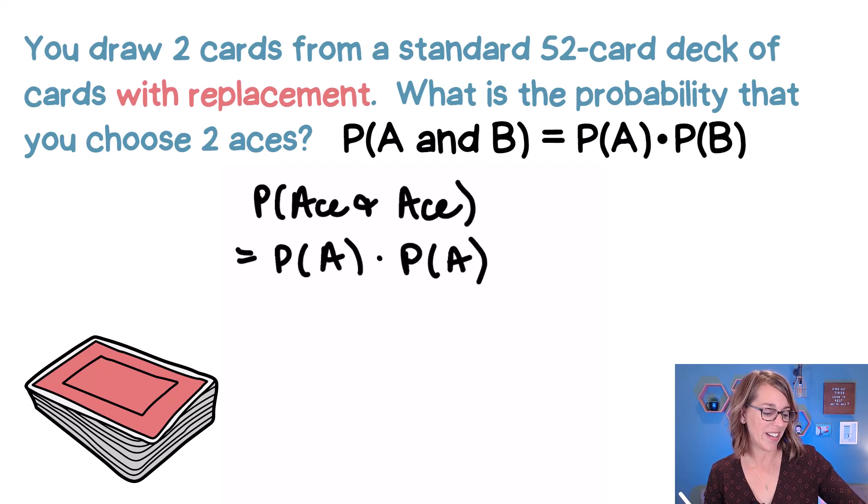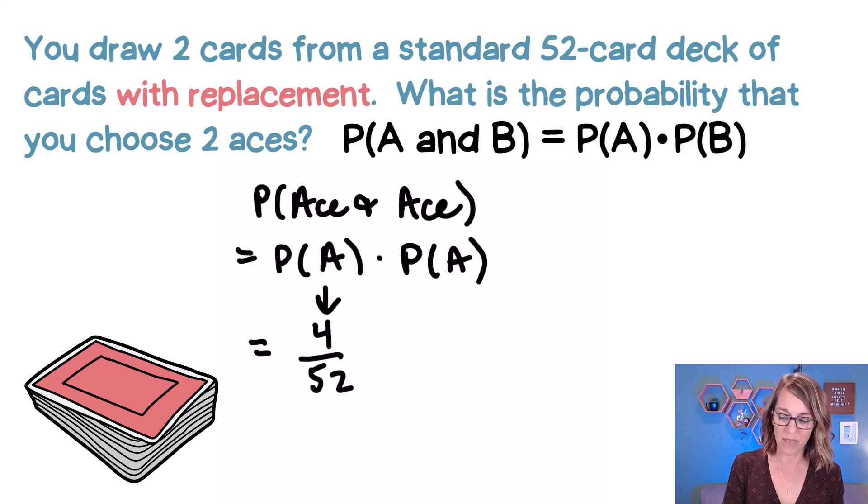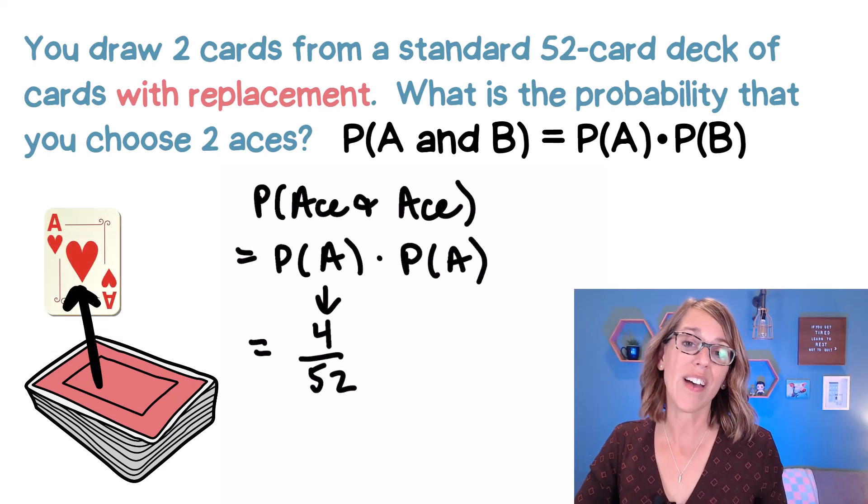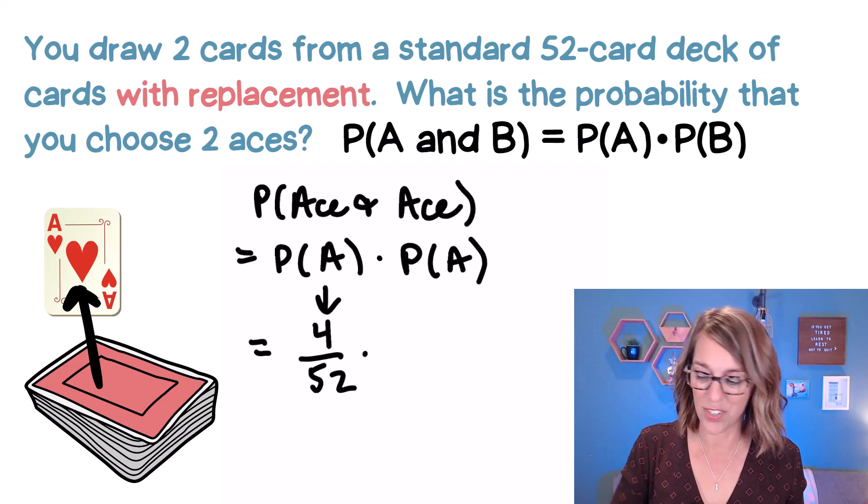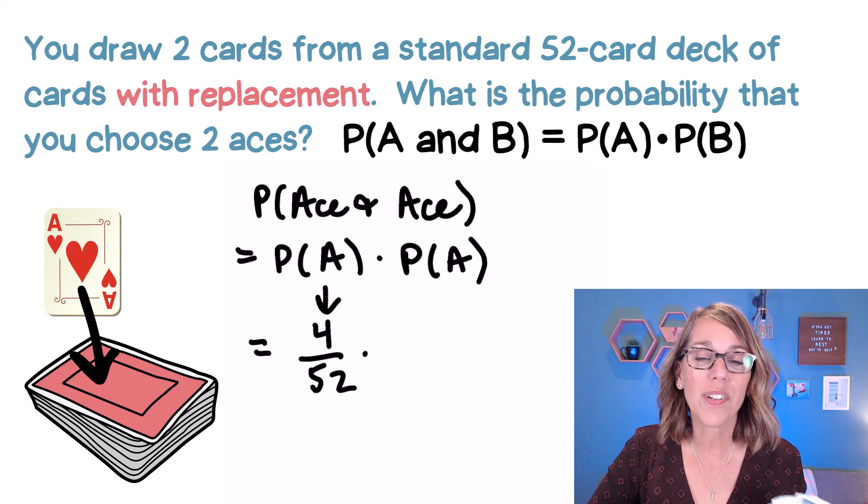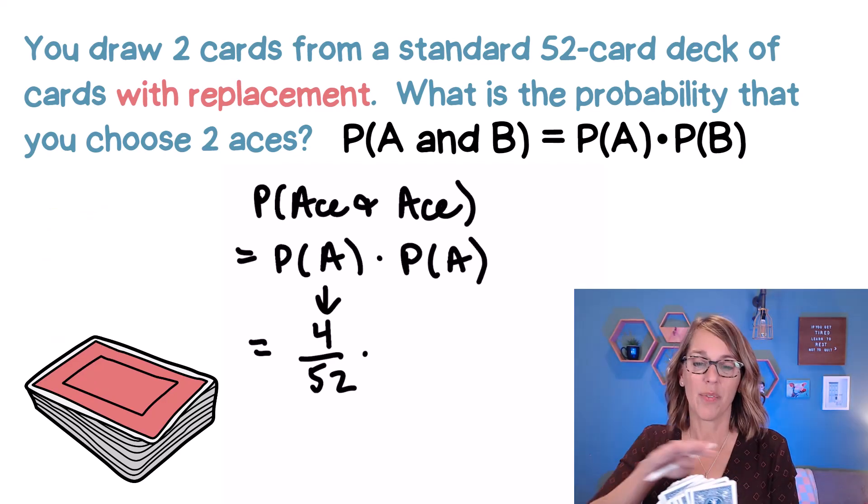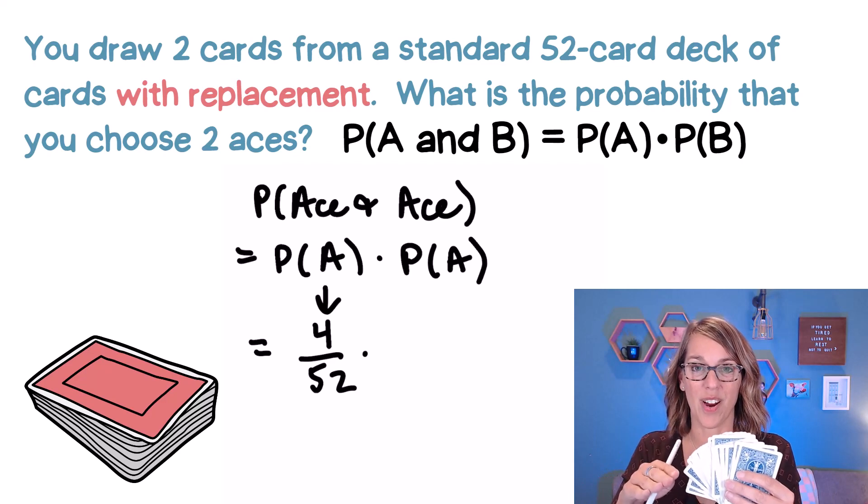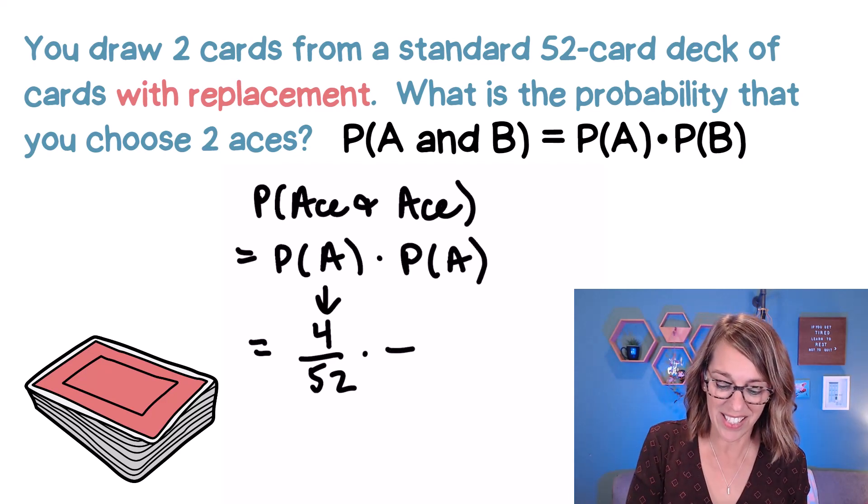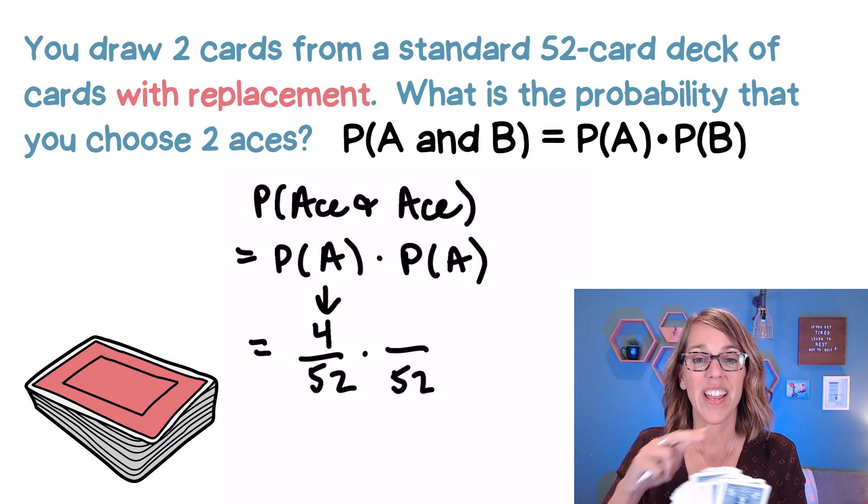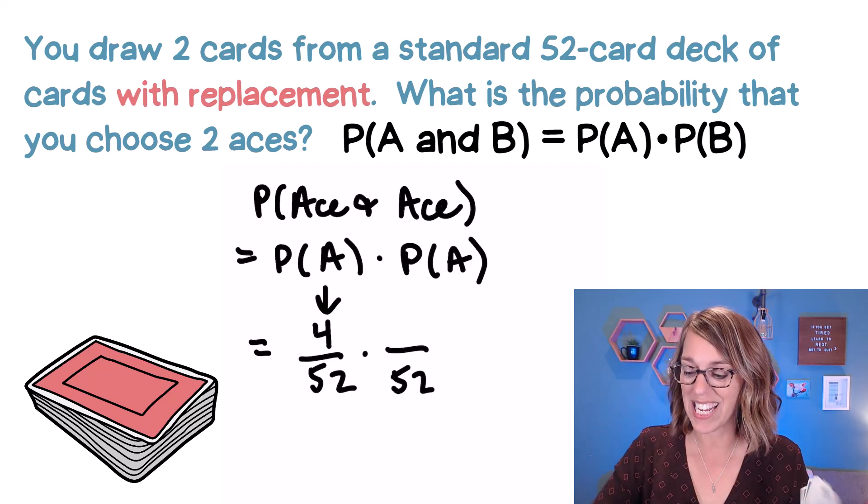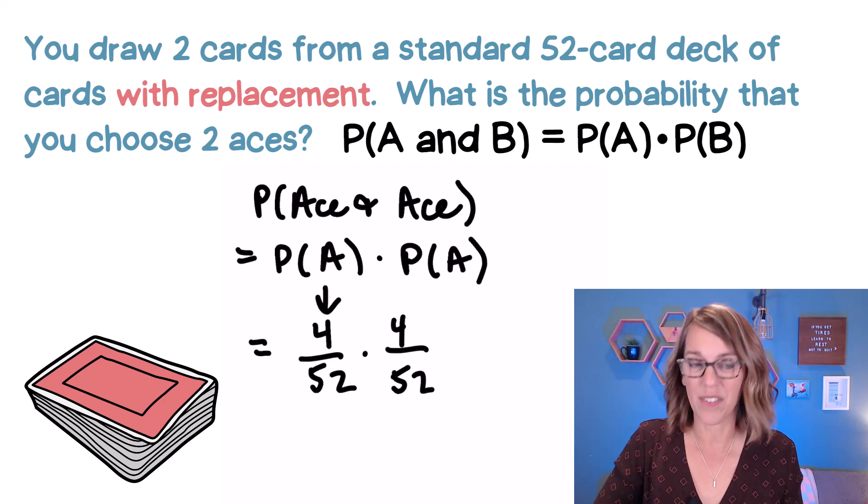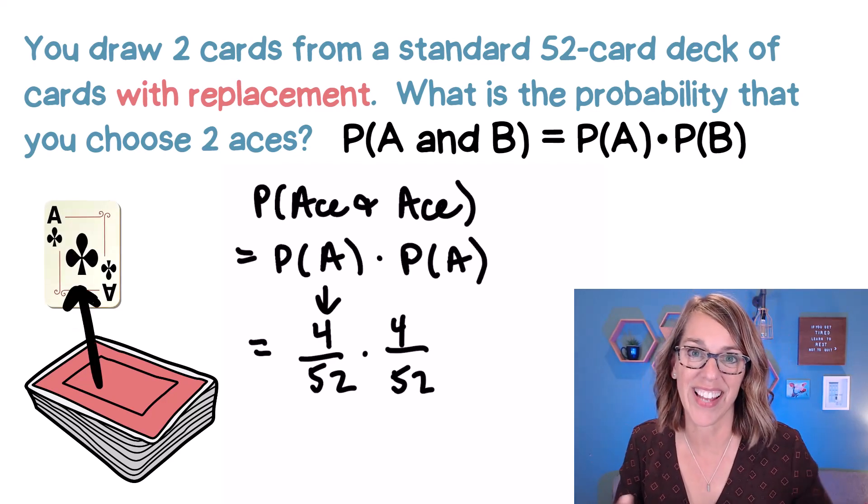Let's go ahead and take our deck of 52 cards and set up that first draw. So in that first draw, all four of my aces are in here. So I could choose any of the four out of 52. So we're going to go ahead and draw that first card, any four out of the 52, but this is with replacement. So we're going to put that card back into the deck, which means I've got my full deck of 52 cards. So when I go to draw a second ace, my denominator is still 52 and I still have all four aces in my deck. So I've got a four out of 52 again, and there's my second ace.